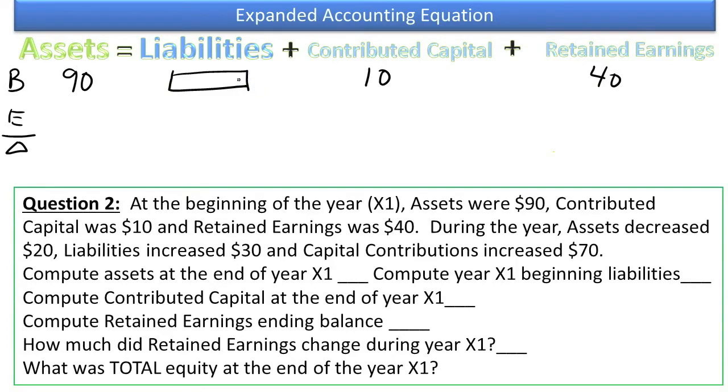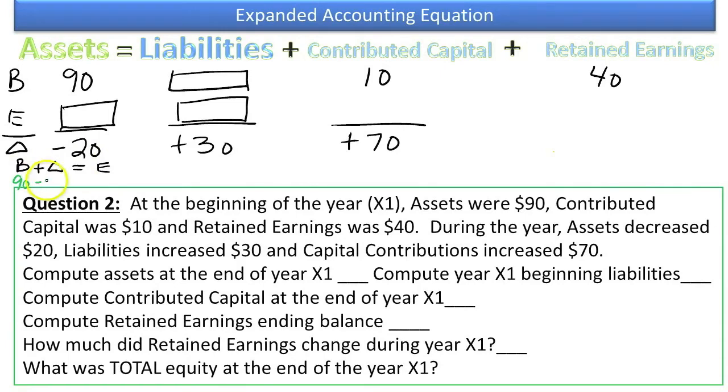During the year, assets decreased by $20. Put a minus 20 there. So the missing piece here is ending assets. Liabilities increased by $30. The missing piece here is ending liabilities. Capital contributions increased by $70. Now it's going to ask us to compute assets at the end of the year. You know the basic formula. If you take your beginning assets and you add the change during the year, you're going to get your ending assets. $90, now this is actually a reduction. So $90 down by $20 gets us down to $70. So our ending assets are $70.